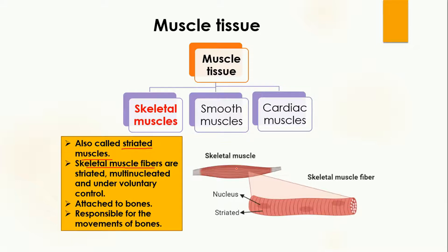If you see here, this is the skeletal muscle. If I take one cell out of this skeletal muscle, I have this skeletal muscle fiber. The skeletal muscle fibers are striated, meaning they have these parallel lines. They are multi-nucleated, which means they contain more than one nucleus in their cell, as you can see here.